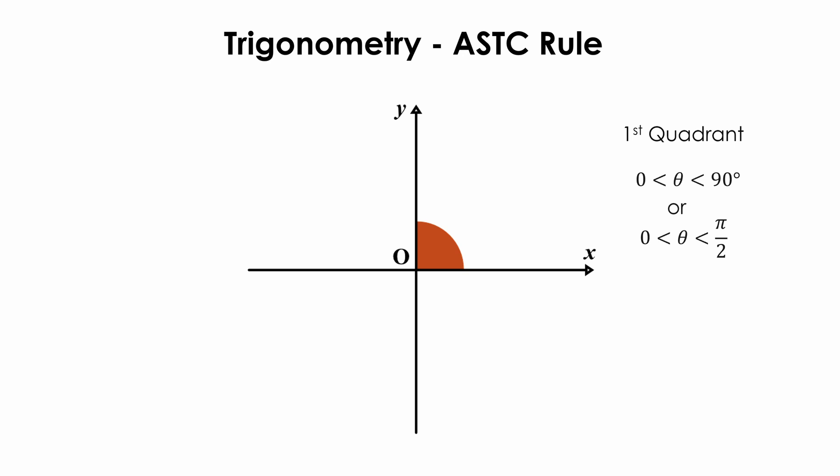In this quadrant, the trigonometric ratios of any angles are always positive. That is, the sine, cosine, or tangent of any angles are always positive.